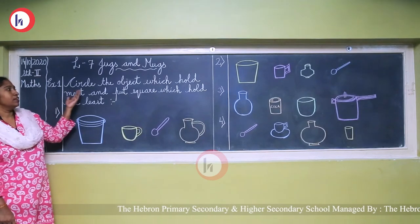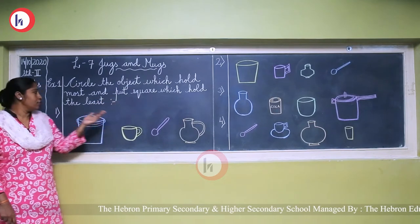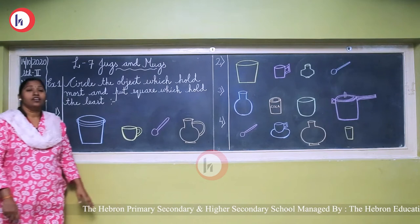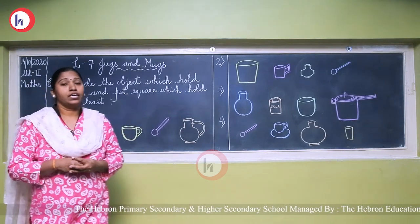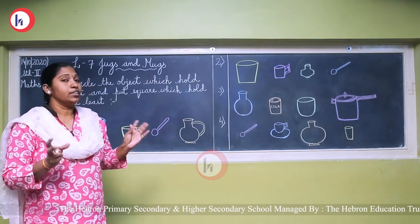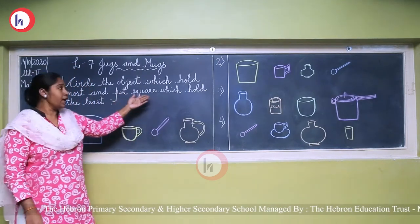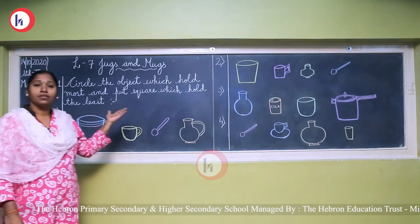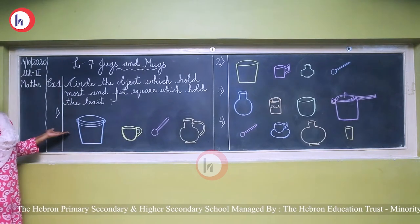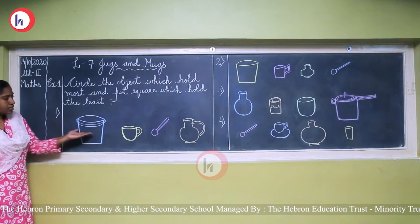Exercise one: circle the object which holds the most and put a square on the object which holds the least. Most means jo jisme zyada — which can contain more quantity of liquid. And we have to put a square on the one which holds the least — sabse kam, very less.